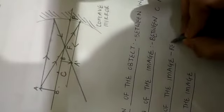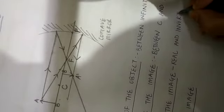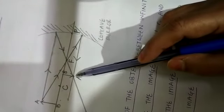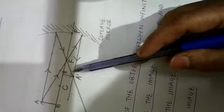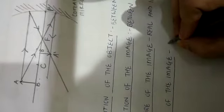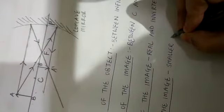The nature of the image: it is a real and inverted image, because it is formed below the principal axis — any image formed below the principal axis is real and inverted. The size of the image: if you compare the size of this image with the size of the object, it is smaller than the object.